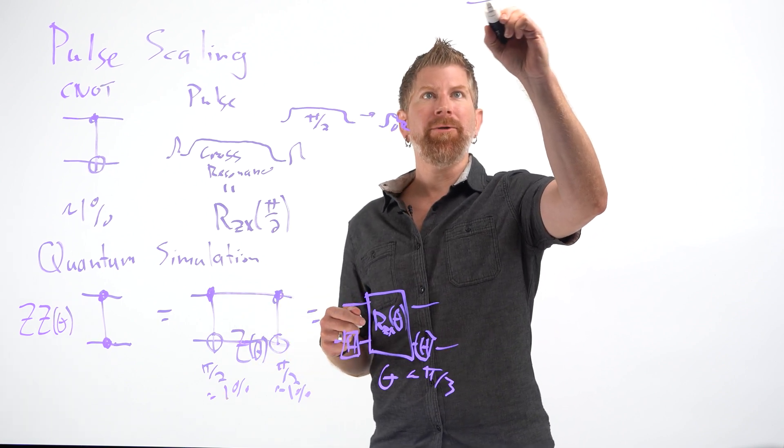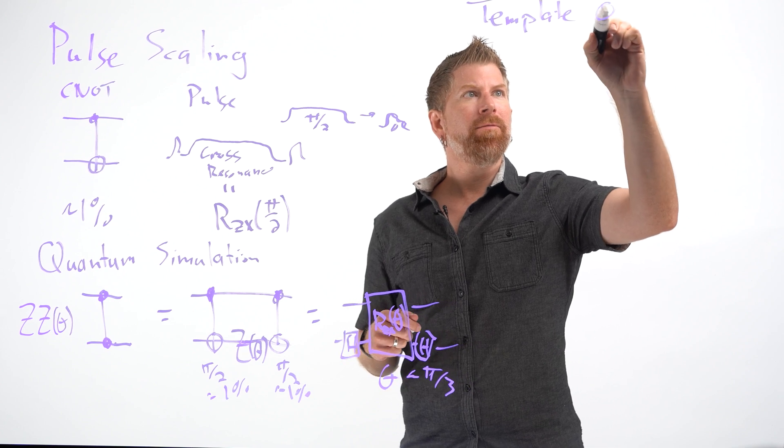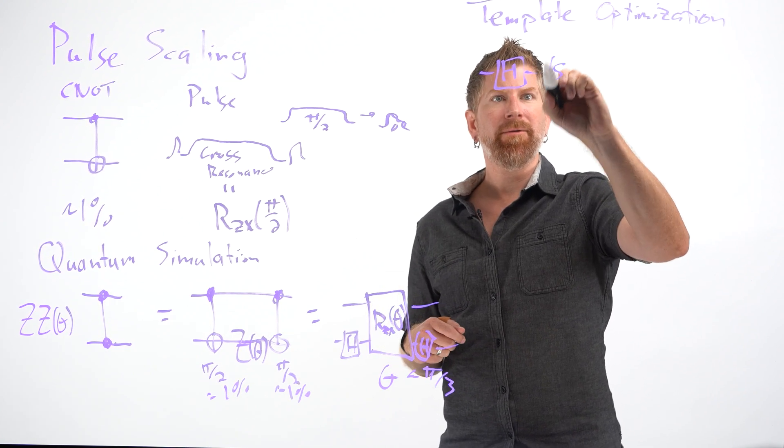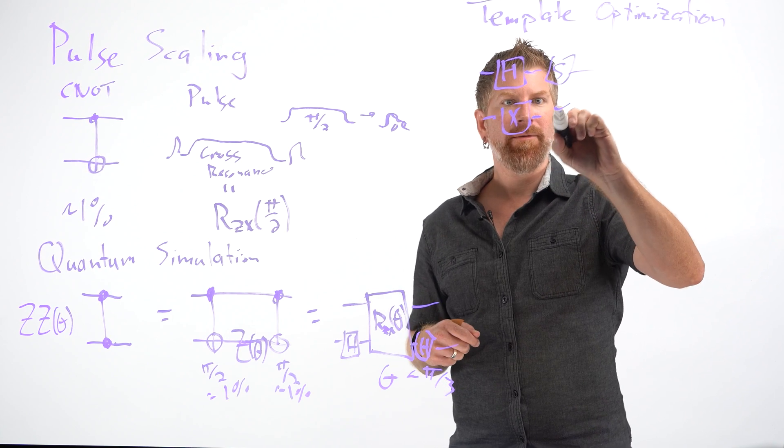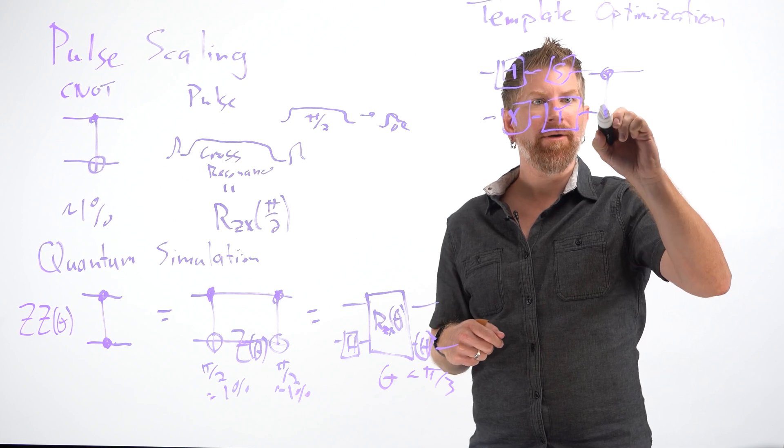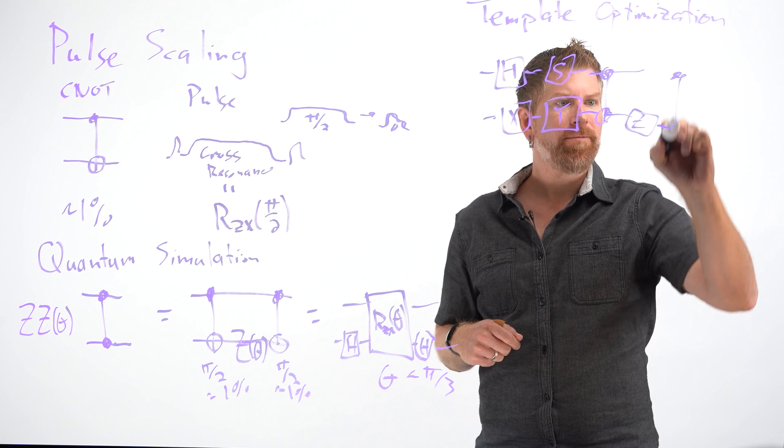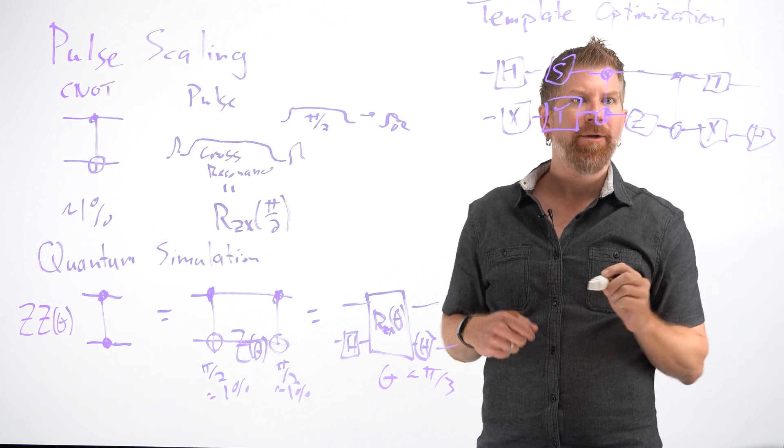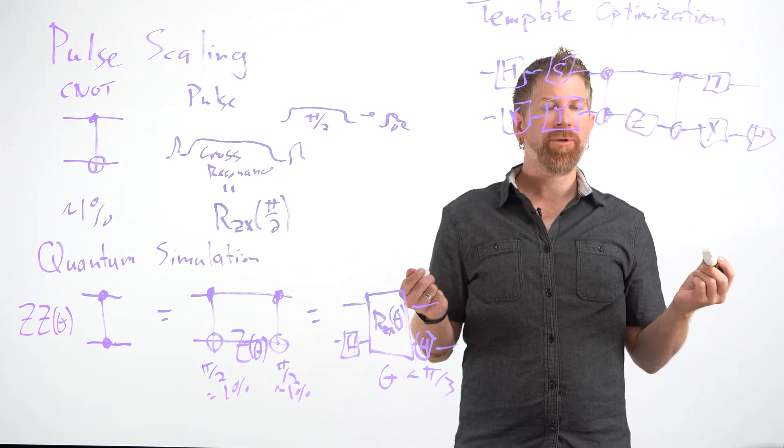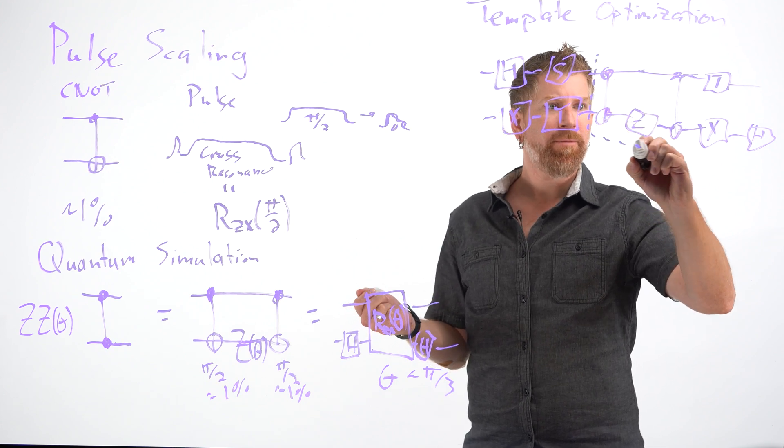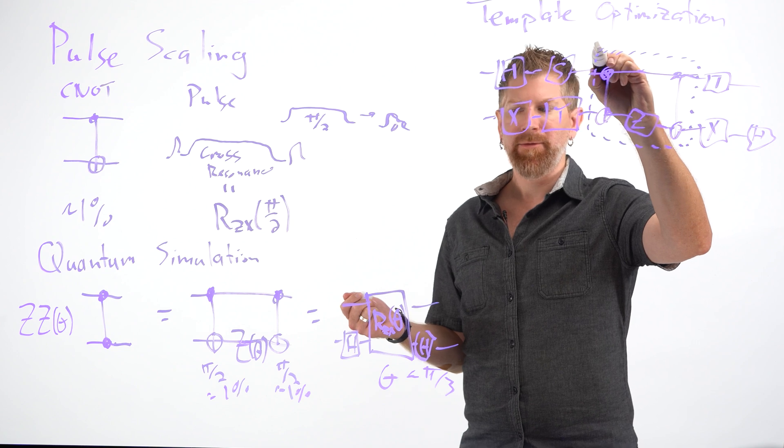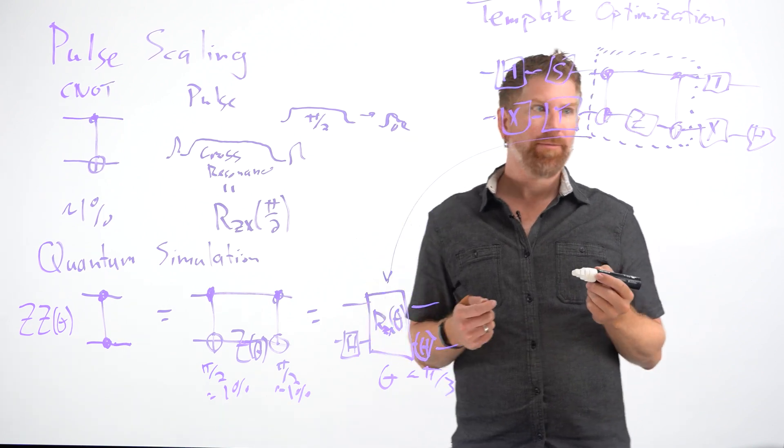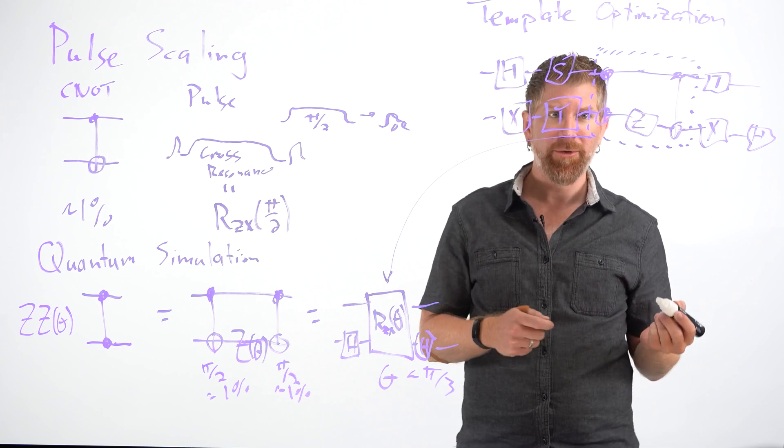So how do we do this? The first thing we do is something called template optimization. So let's say I have a circuit that looks like this. And then I have something that looks like our circuits with a Z. So we've got some more X's and an H. Let's throw a T in there for good measure. So say I have a circuit like this. Basically, all template optimization does is it analyzes this circuit and finds the part that looks like it can be replaced by an RZX. So what I'm basically doing is taking this and replacing it with this or something equivalent.